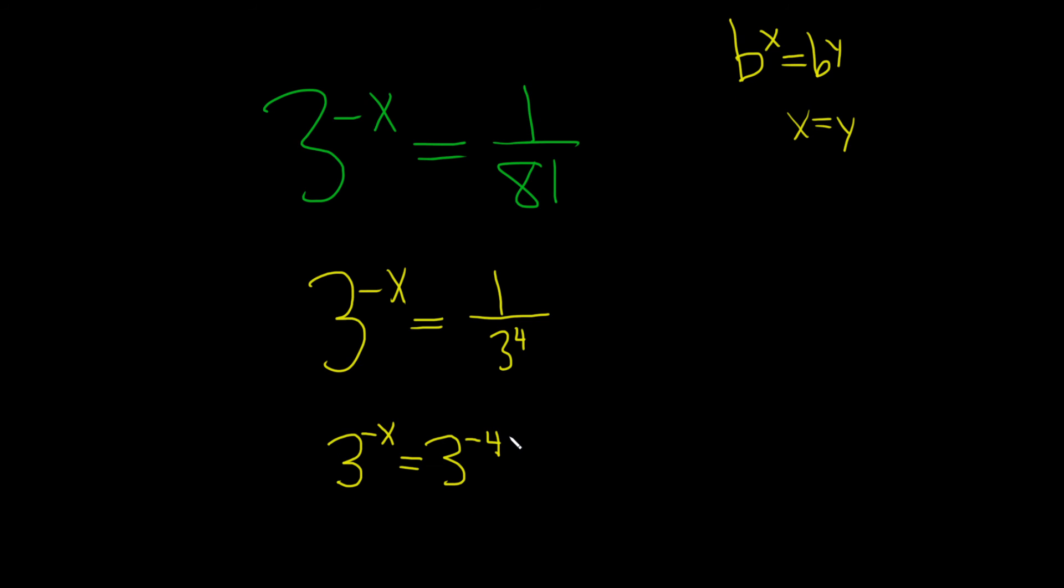And so now we're in a position where we can use our formula because the b is 3 here. So these go away, and you just get negative x equals negative 4. Then just divide by negative 1 on both sides. So we end up with x equals 4, and that would be our final answer.